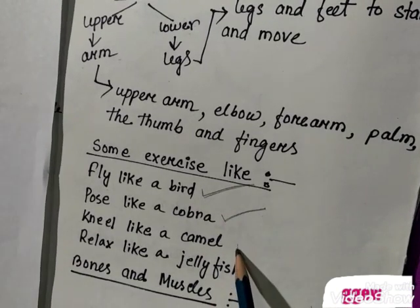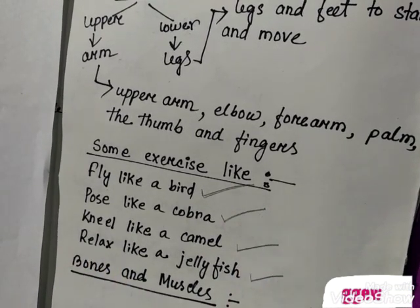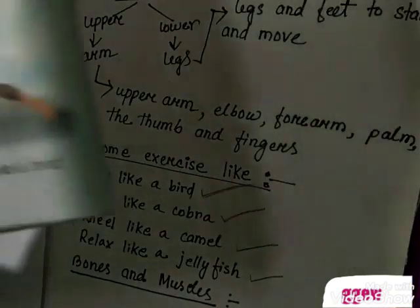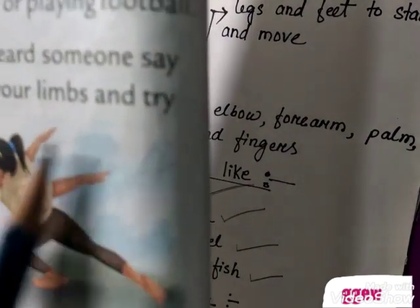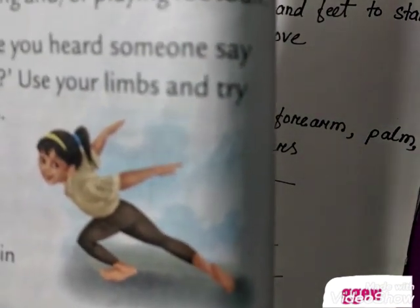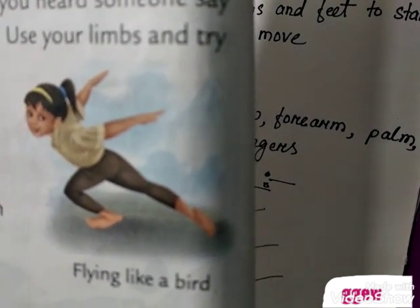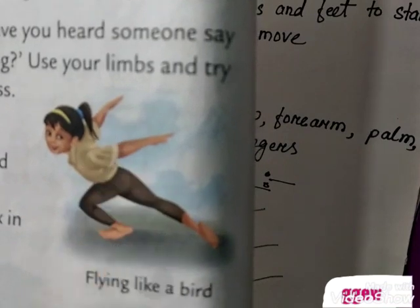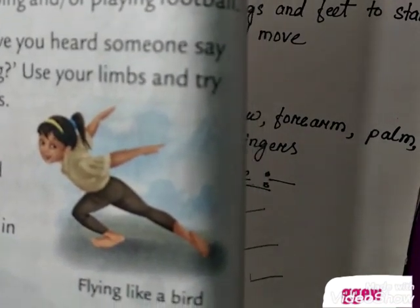Then kneel like a camel, relax like a jellyfish. You can see this girl is doing some poses — she is flying like a bird. So with the help of our arms and legs we can do many exercises.